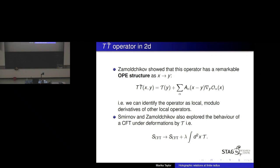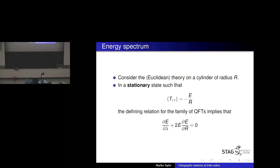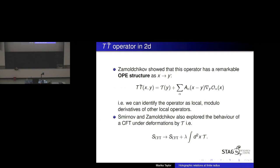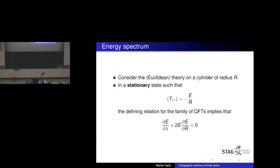Zamolodchikov and his collaborator Smirnoff explored the behavior of a conformal field theory deformed by this TT-bar operator, looking at the spectrum of states and how it depends on the deforming parameter lambda — which in our case is associated with the radius of the surface. They put the theory on a cylinder in a stationary state, going to Euclidean theory. In a stationary state, the energy is quantized in units of the radius of the cylinder. The defining relation for the family of CFTs automatically gives a differential equation for the energy in terms of lambda, characterizing which member of the family you're in.